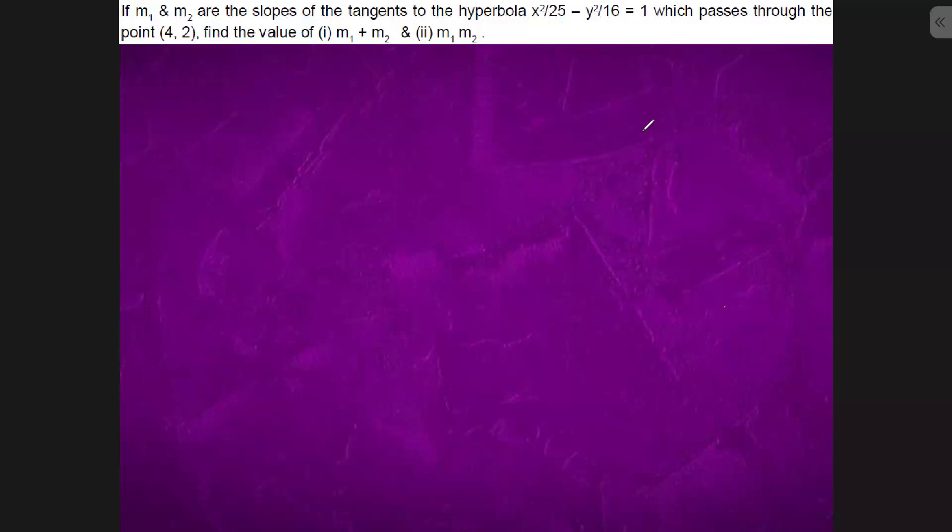So we are told that we are given a hyperbola. We have a given point from where tangents are drawn. This is four comma two.